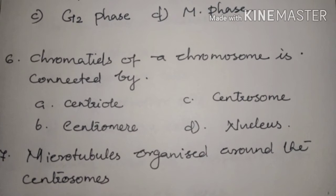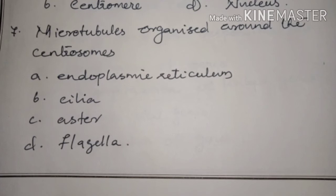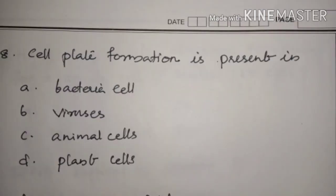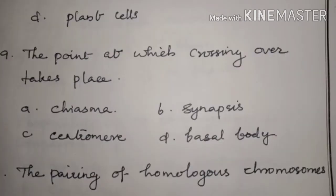Chromatids of a chromosome are connected by — Answer: Option B, centromere. Microtubules organized around the centrosome — Answer: Option C, aster. Cell plate formation is present in — Answer: Option D, plant cells. The point at which crossing over takes place — Answer: Option A, chiasma.